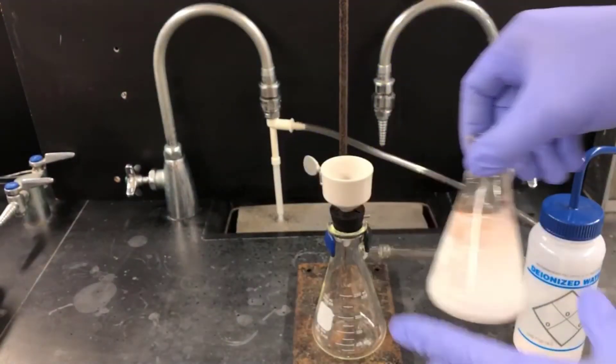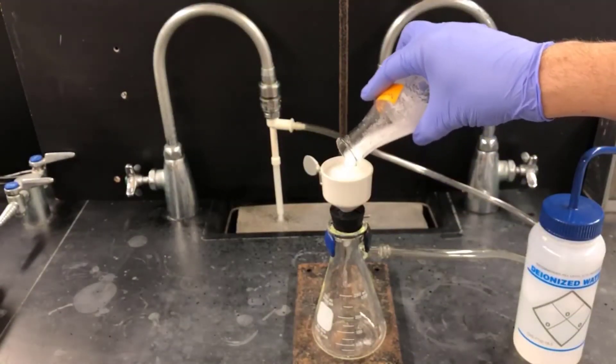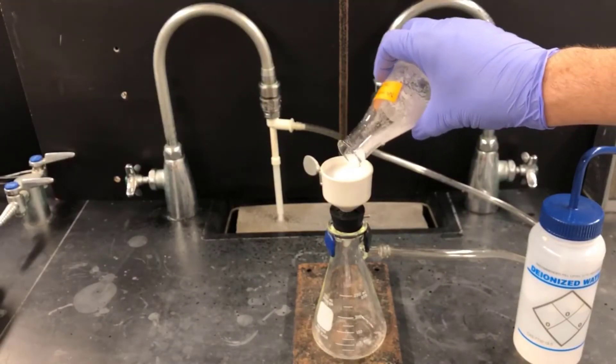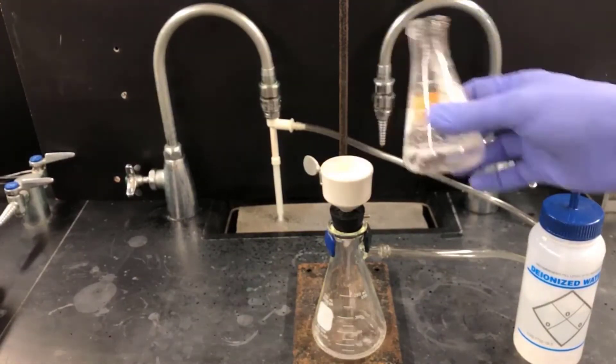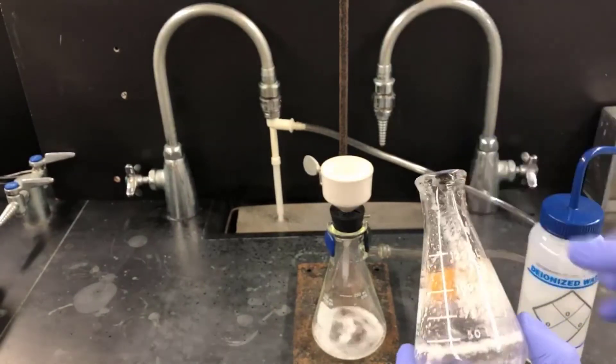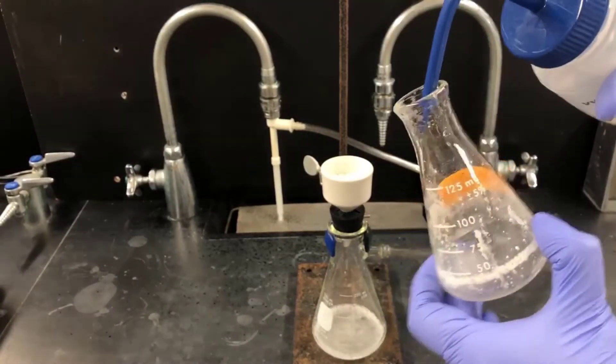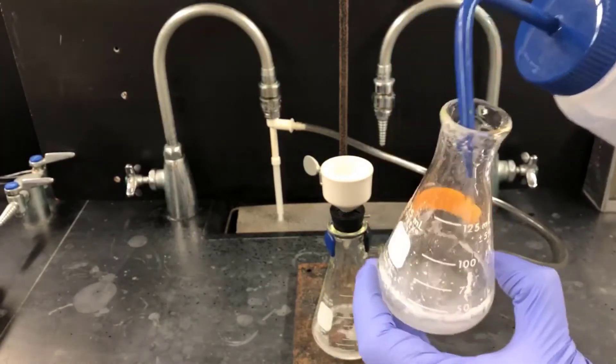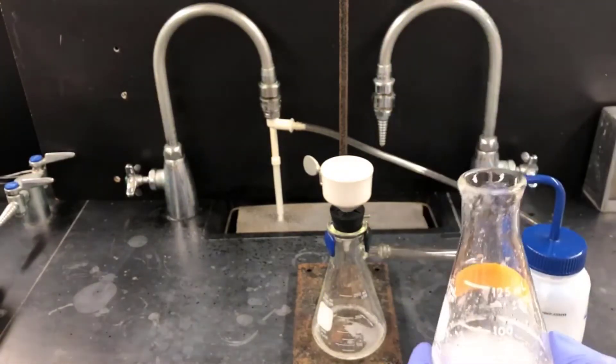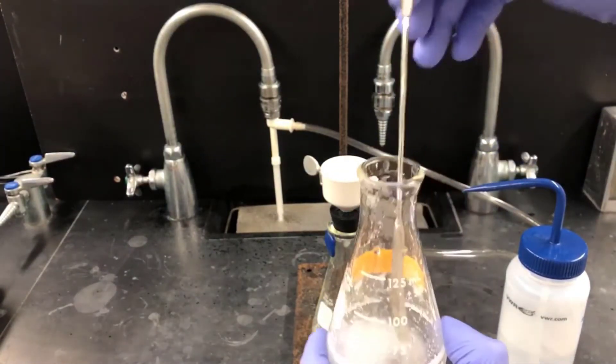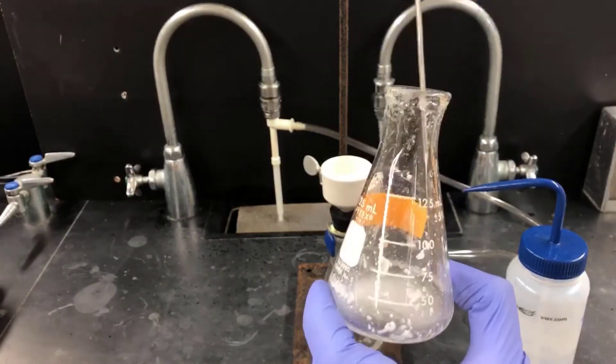Now, I'll take the aspirin mixture, swirl it, and pour it into the Buchner funnel. The vacuum causes the water to get sucked through the filter paper, and the aspirin stays in the Buchner funnel above. You can see there's still aspirin stuck in this flask, so I'm going to rinse it with some deionized water and also use my spatula to scrape the material off the sides of the Erlenmeyer flask. Then I'll swirl and pour again to try to get more of the aspirin into the Buchner funnel.